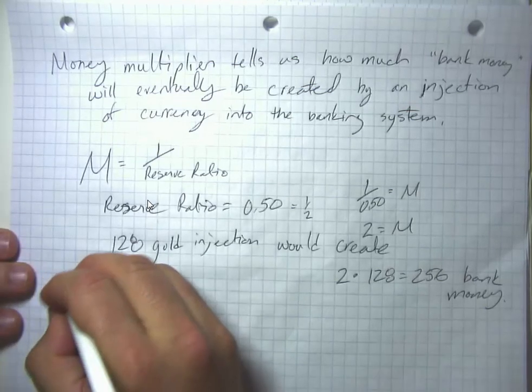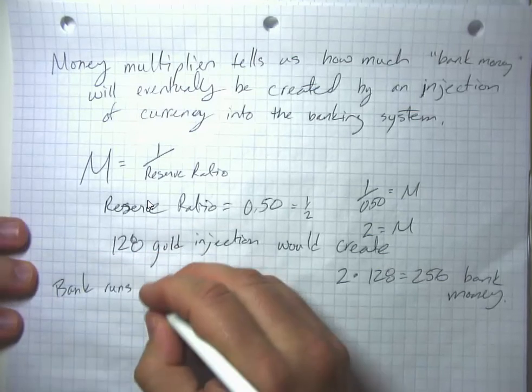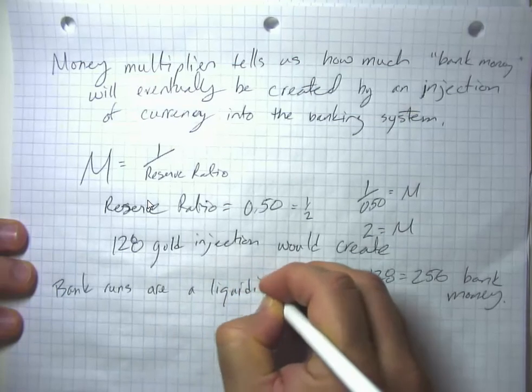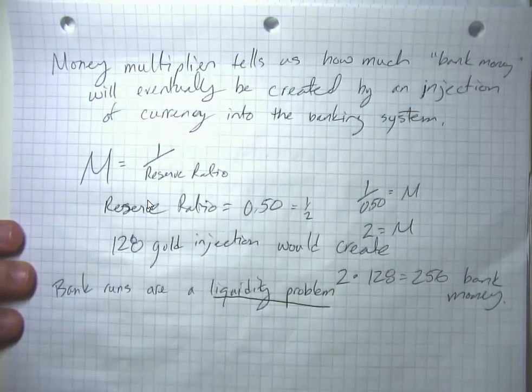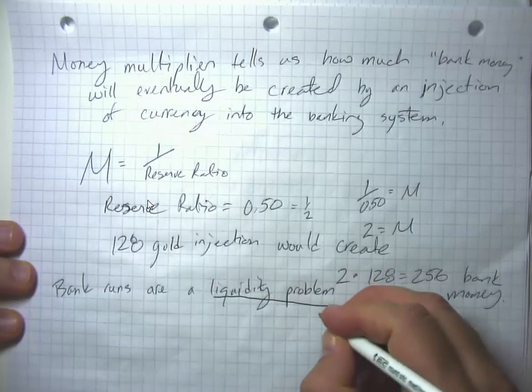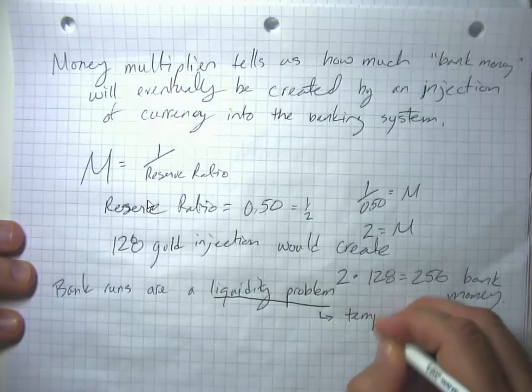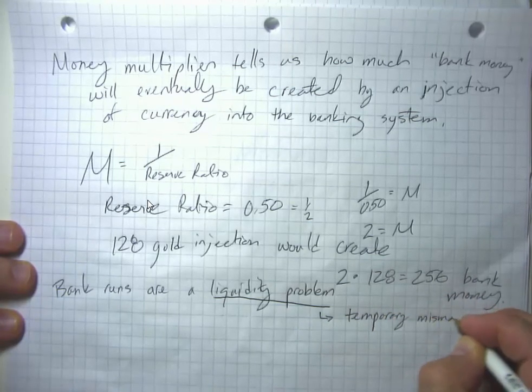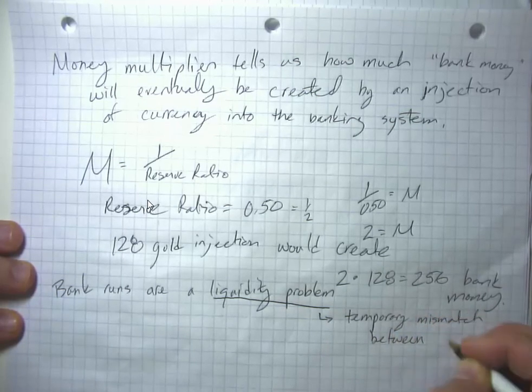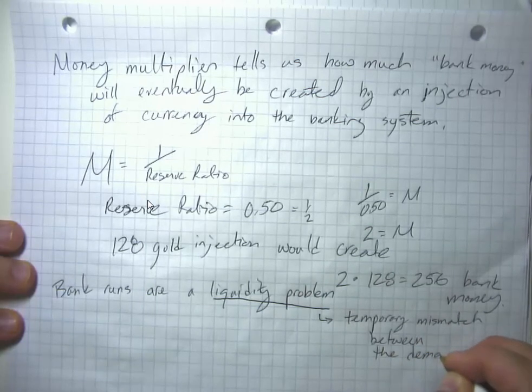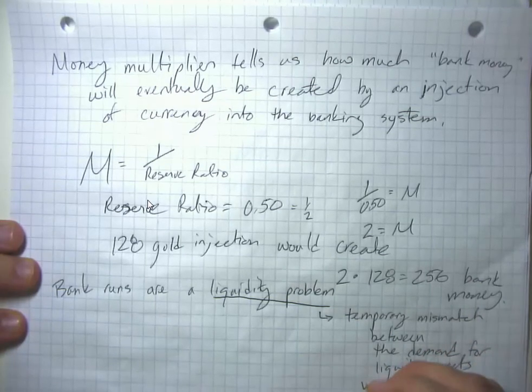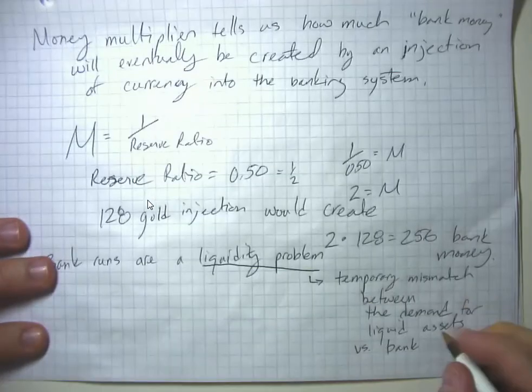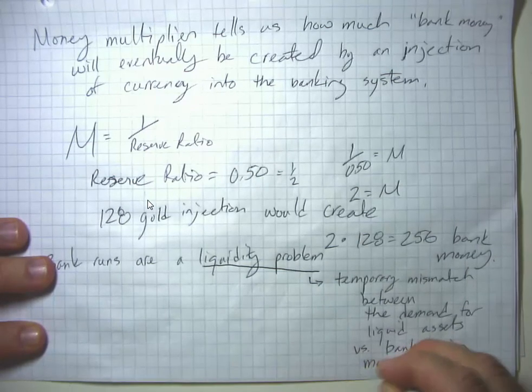Bank runs are what we call a liquidity problem. The bank would eventually have all the money needed to repay if it can have enough time for the loans to come back in. It's a liquidity problem, a temporary mismatch between the demand for liquid assets, people wanting to withdraw their money, versus the bank having mostly illiquid assets.